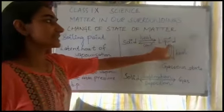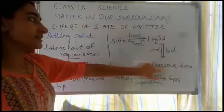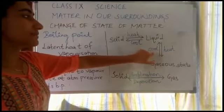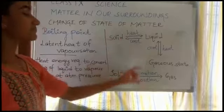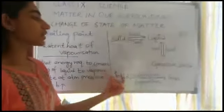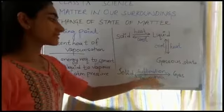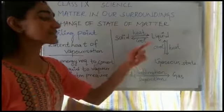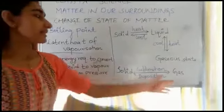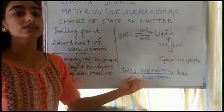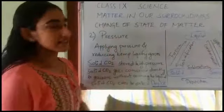The solid on heating changes into liquid, and the liquid on further heating changes into its gaseous state. When the substance in its gaseous state is cooled, it changes into its liquid state, and the liquid when cooled again changes back to its solid state. A solid can also change into a gaseous state without entering the liquid state — that process is known as sublimation. The reverse process — a gas converting into solid without entering the liquid state — is known as deposition.